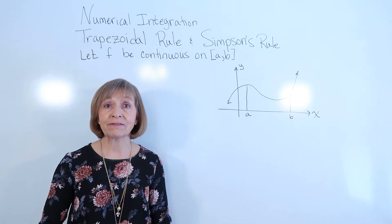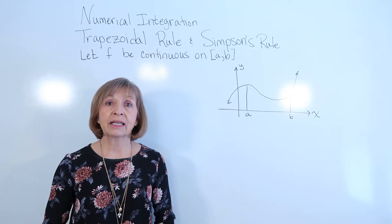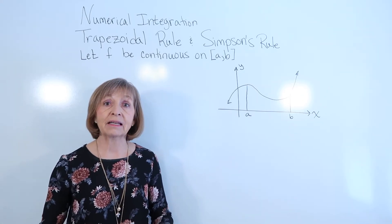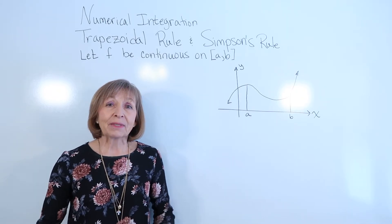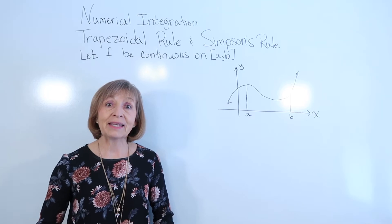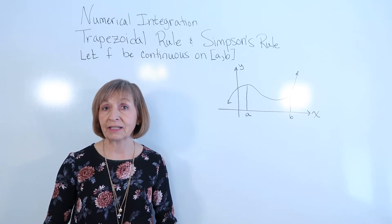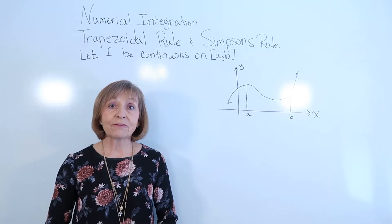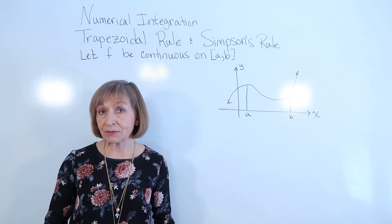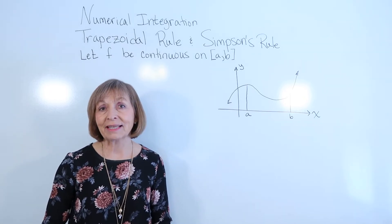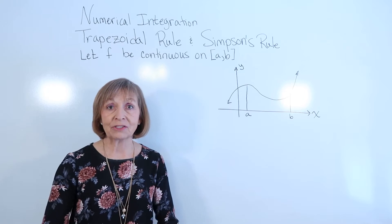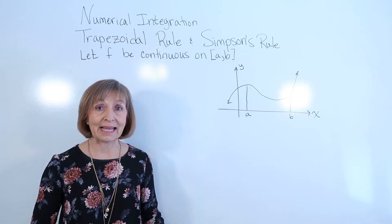We saw approximations of the definite integral using rectangles — putting in many sub-rectangles and adding up those areas to get our value. But there are actually other types of figures and area formulas we can use to get approximations for our definite integrals other than just rectangles. The first rule we have for this is the trapezoidal rule, where we use trapezoids instead of rectangles. In most situations it takes much fewer trapezoids to get better approximations, meaning less work.